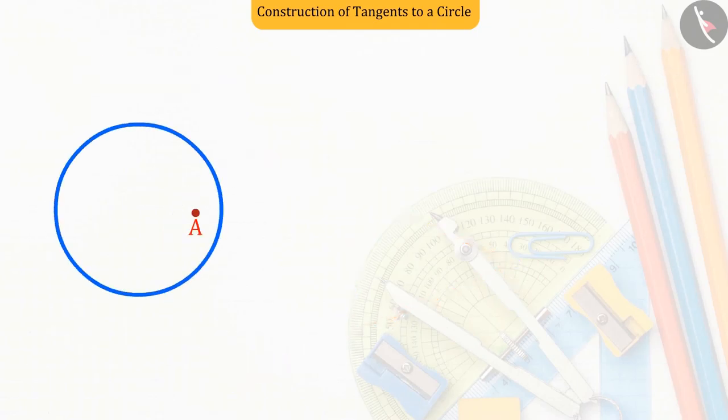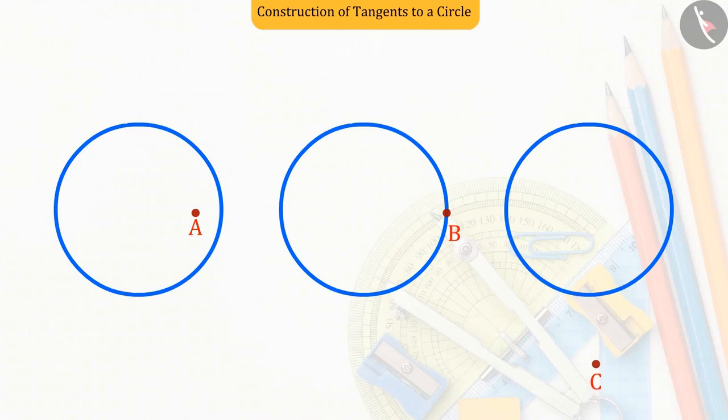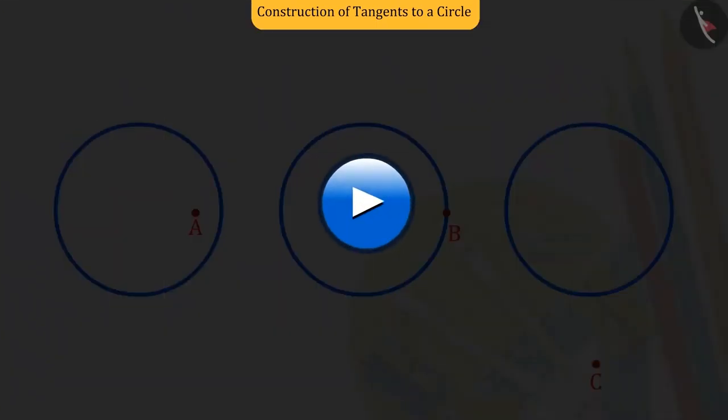Can you tell what will be the number of tangent lines drawn from the point to the circle in each case? To try yourself, pause the video and then match your answer.